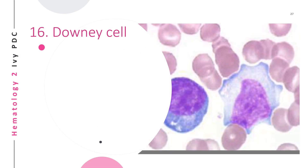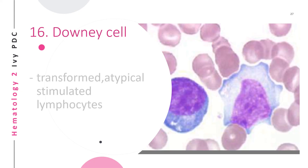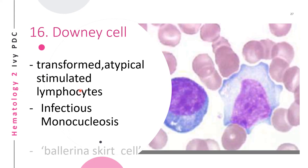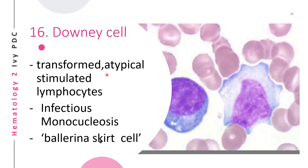The last WBC anomaly discussed is the Downy cell — lymphocytes that have been transformed or atypically stimulated. These are seen in infectious mononucleosis and have a characteristic ballerina skirt appearance. The cytoplasm gives the impression of looking at a ballerina from a top view, which is why it is called the ballerina skirt cell.